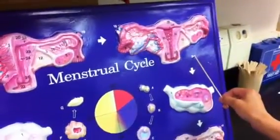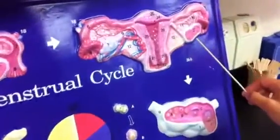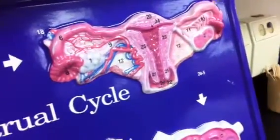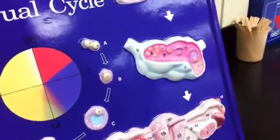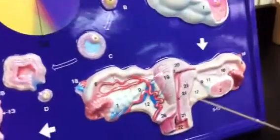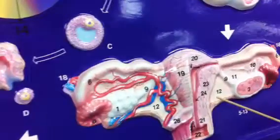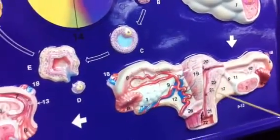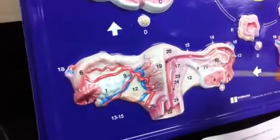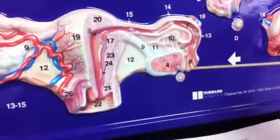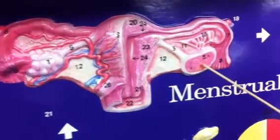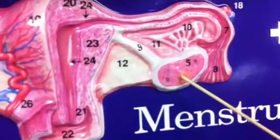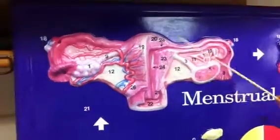Days 28 to 25 is menstruation. Days 5 through 13 is the proliferative phase, during which the endometrium thickens. Days 13 to 15 is the ovulation stage, when the secondary oocyte is ovulated out. Days 21 to 27 is the secretory phase, because the corpus luteum secretes progesterone to trigger the secretory phase.